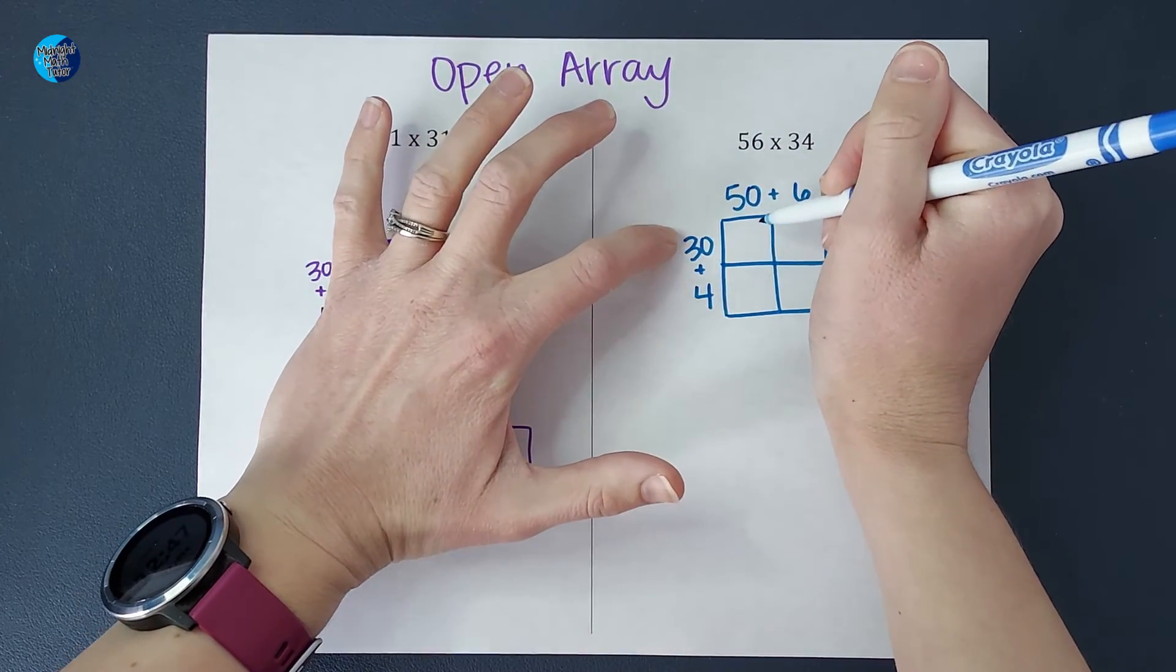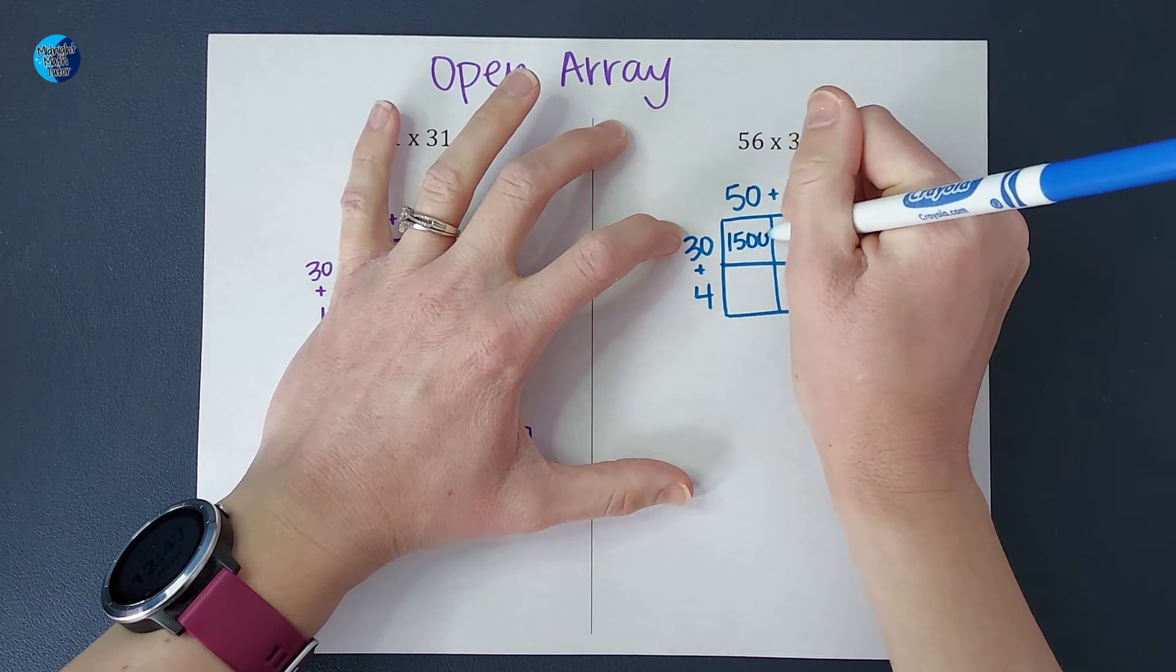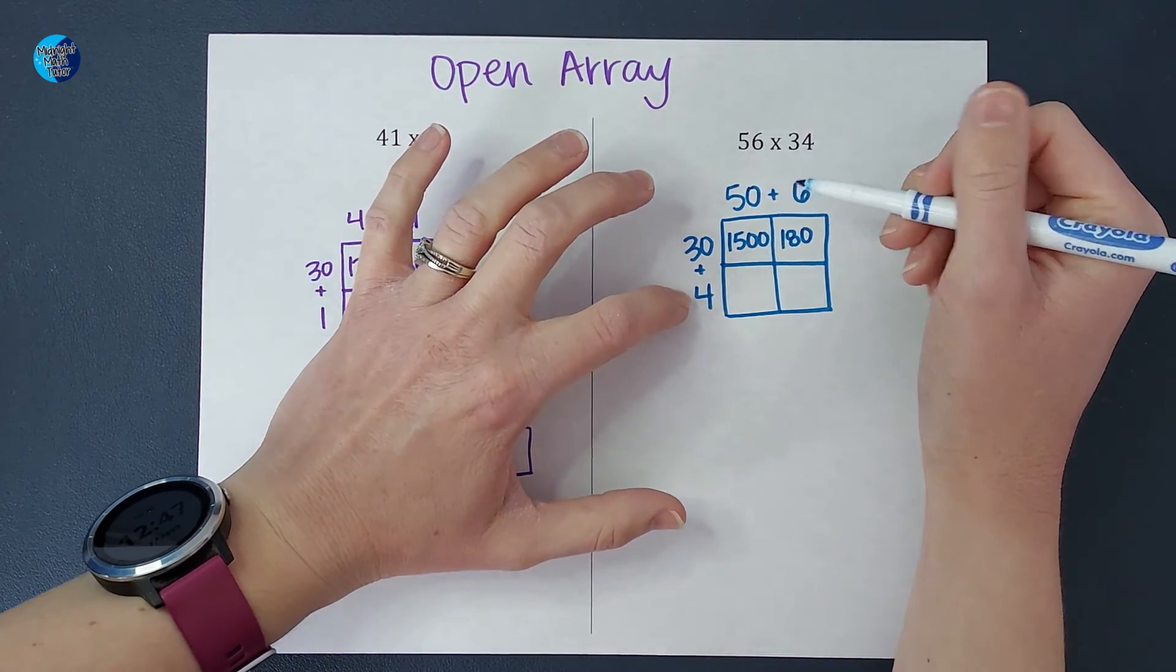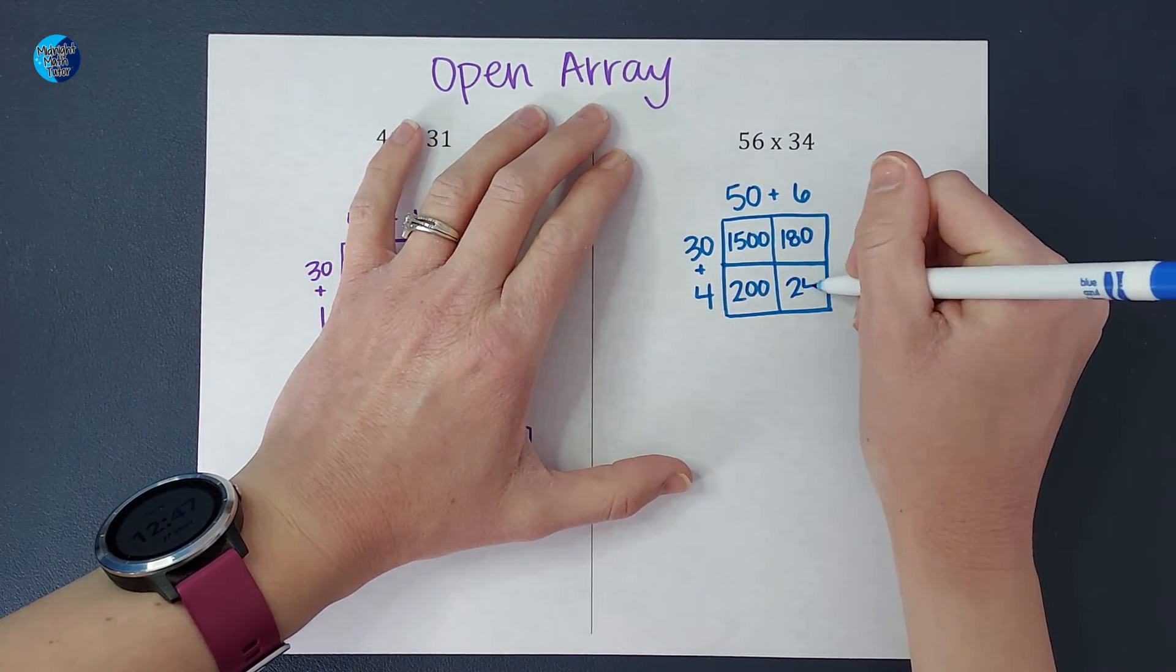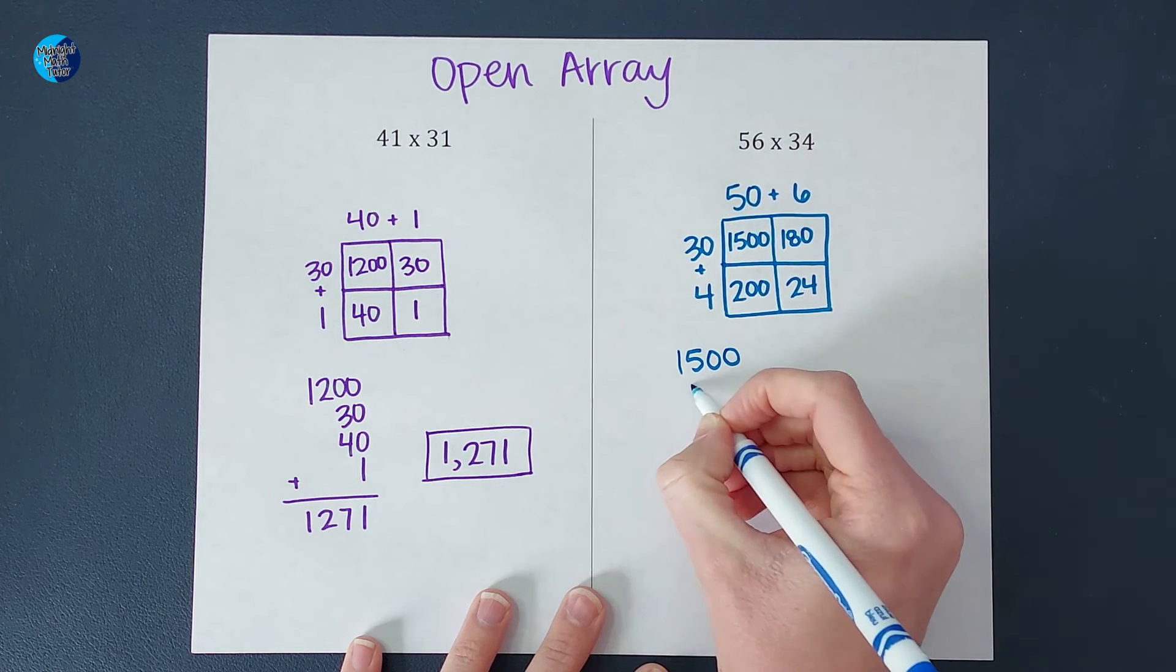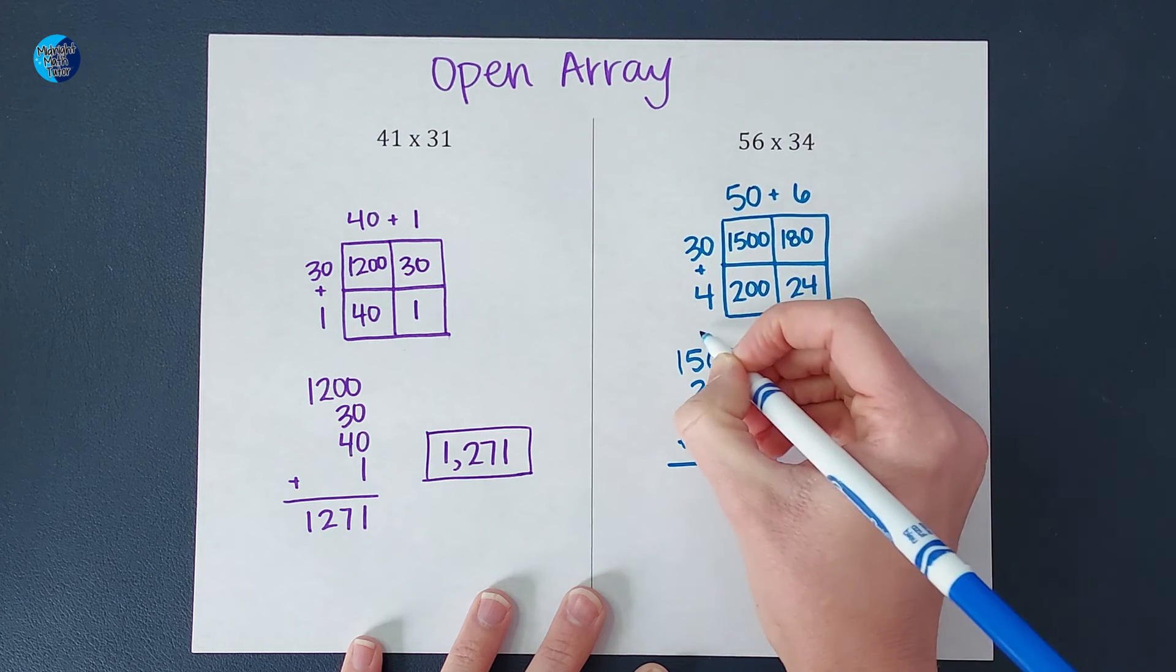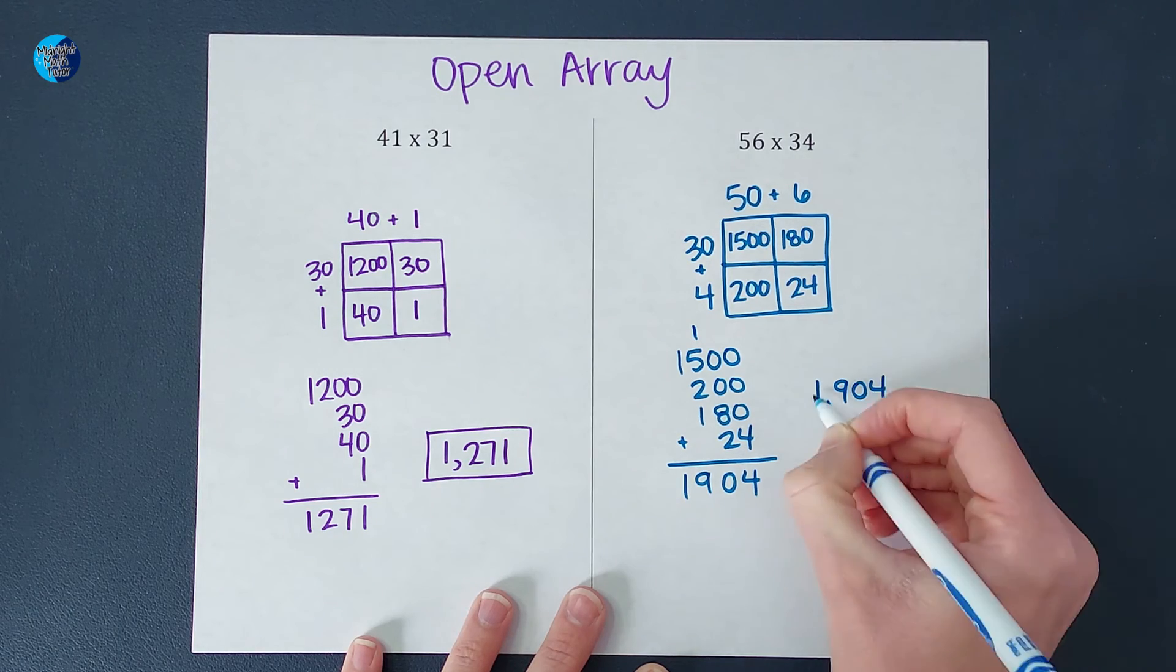Let's multiply these. 50 times 30 gives me five times three is 15, add the two zeros, so 1500. Six times 30 is 18, then you add the zero, so 180. 50 times four gives me 200. And six times four gives me 24. I add these all up: 1500 plus 200 plus 180 plus 24. And I end up with 1,904.